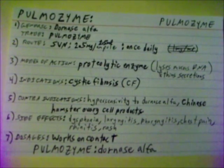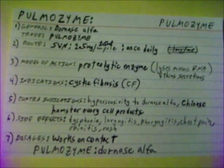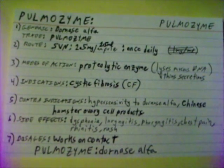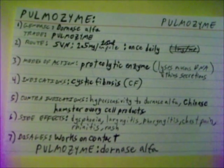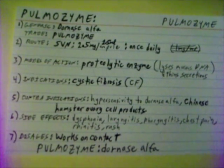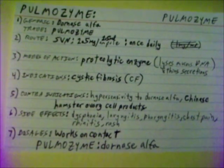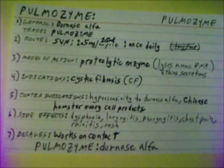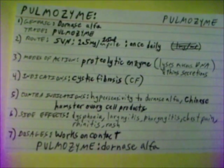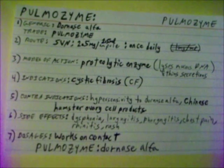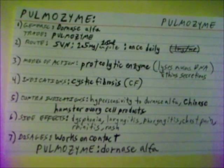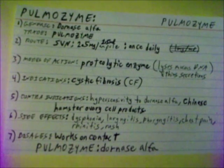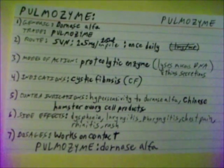Contraindications for Pulmozyme: hypersensitivity to Dornase Alpha and allergies to Chinese hamster ovary cell products, from which it is manufactured. Side effects are dysphonia, laryngitis, pharyngitis, chest pain, rhinitis, and rash. Pulmozyme works on contact.